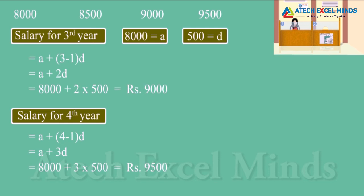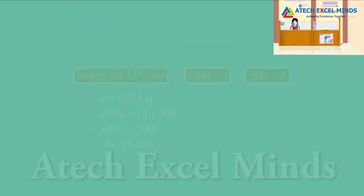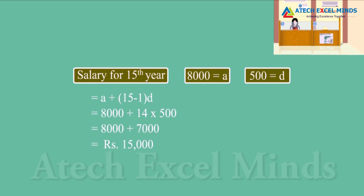Let us now try to find Rina's salary for the 15th year. Based on earlier patterns, we can write that the salary for the 15th year is equal to A plus (15 minus 1) into D. Here, A is the salary for the first year and D is the annual increment. Upon simplifying, we get salary as Rs. 15,000.